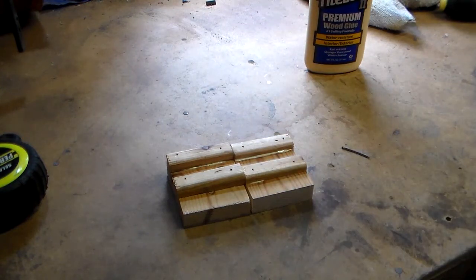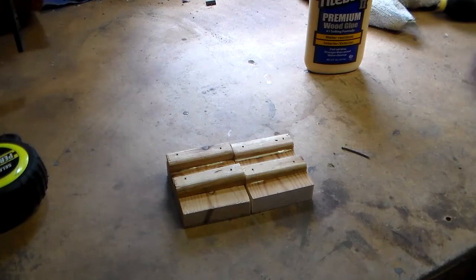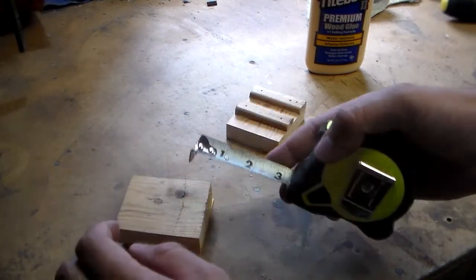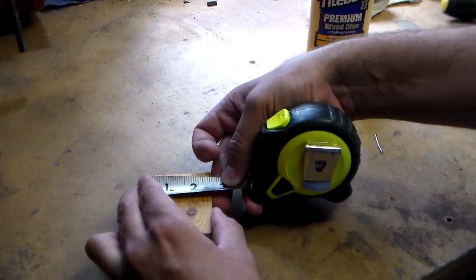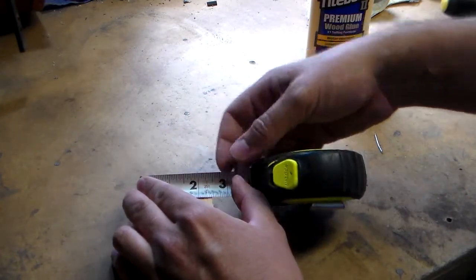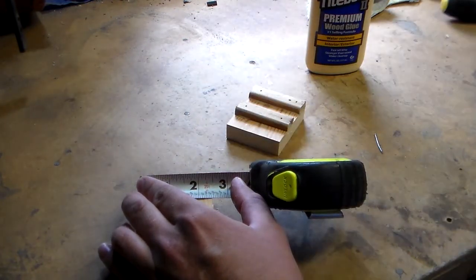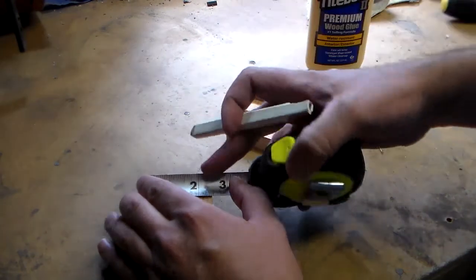And once the glue dries, then these should be pretty much indestructible. At least for what we're going to be asking of them. Our next step is going to be to find the center of our block, which if it measures two and a half inches, that's going to be roughly one and a quarter inches to be center.